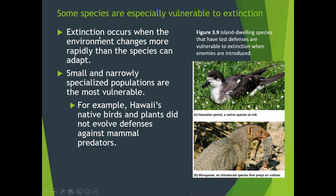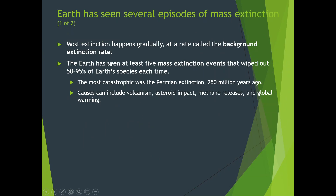Extinction occurs when an environment changes more rapidly than the species can adapt. Small and narrowly specialized populations are the most vulnerable — for example, the panda bear eats only bamboo, so if the bamboo disappears, so does the panda. In Hawaii, native birds and plants did not evolve defenses against the mammal predators brought onto the island. Most extinctions happen gradually, and that rate is called the background extinction rate — it happens naturally throughout all of time.